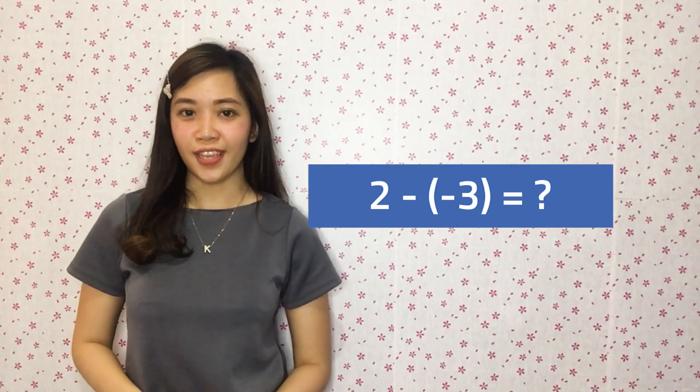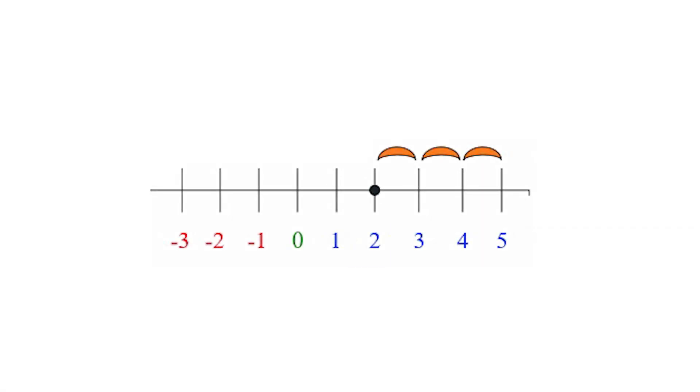Here's another tip! Remember our rules for adding with similar signs — the same rules apply. In subtracting a negative number from a positive number, you turn the subtraction sign followed by a negative sign into a plus sign, so the equation turns into a simple addition problem. For example, 2 minus negative 3: on the number line, we start at 2, move forward 3 units, so the answer will be 5.